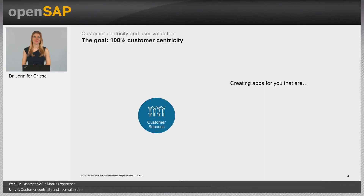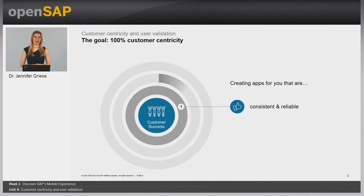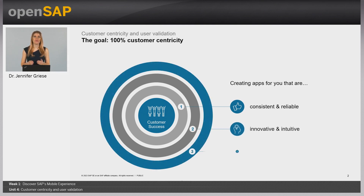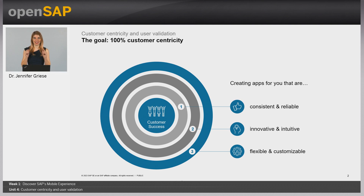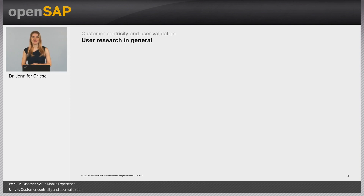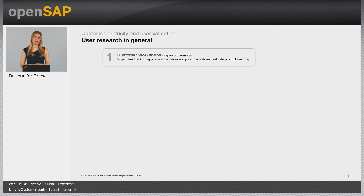At SAP, our goal is to achieve 100% customer centricity. We want to create apps for you that are consistent and reliable, innovative and intuitive to use, but also flexible and customizable. To make sure we are actually building what's really needed, I've broken down our user research activities into six categories. First, we love to engage with the customer in customer workshops — essential to gain feedback on early concepts and personas, but also to help us prioritize feature development and validate our roadmap. Next, we have field research, where we use observation and shadowing techniques to gain an in-depth understanding of the user and their work environment.